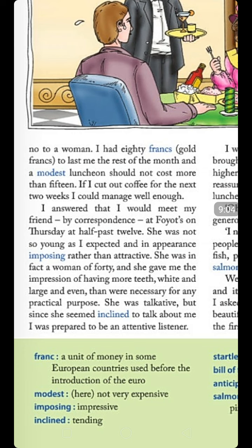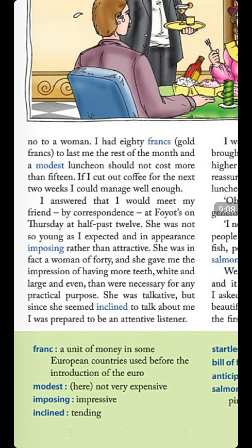He answered that he would meet his friend at Foyot's on Thursday at half past twelve. When they met, she was not as young as he had expected — imposing rather than attractive. She was a woman of about 40 and gave the impression of having more teeth — white and large — than were necessary for any practical purpose. She was very talkative, but since she seemed inclined to talk about him, he was prepared to be an attentive listener.